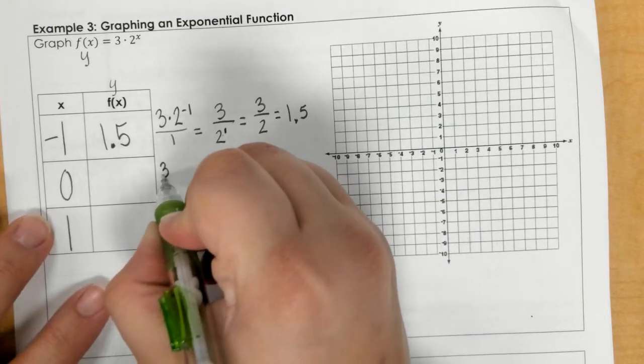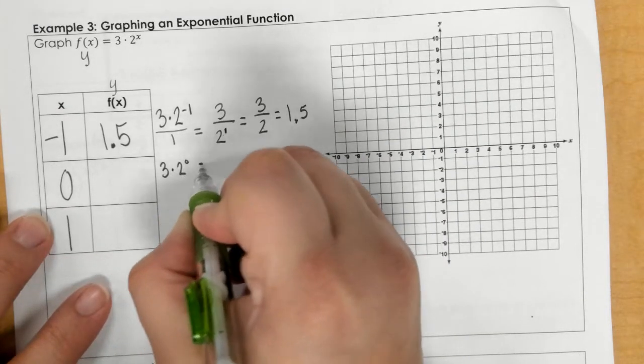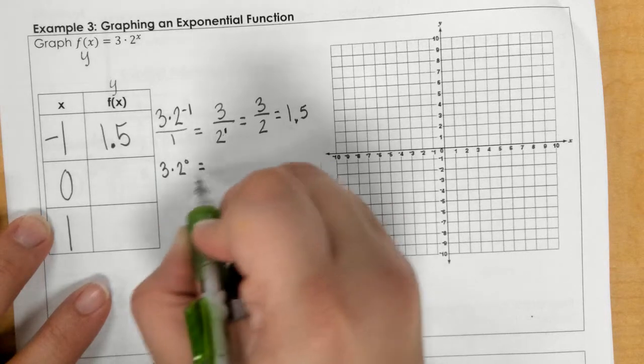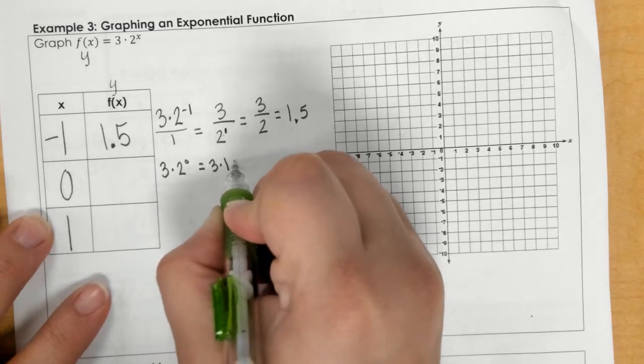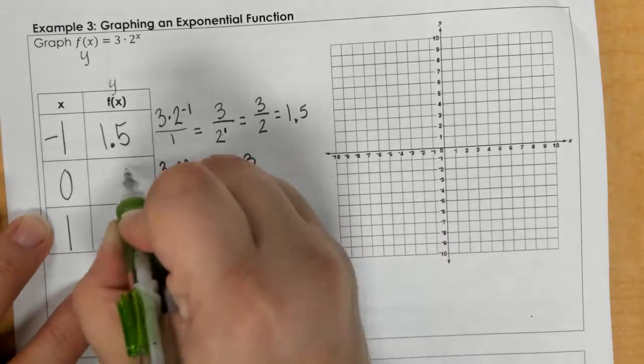Then, for the 0, I've got 3 times 2 to the 0. But 2 to the 0 is 1, so this is 3 times 1 now. And 3 times 1 is 3.